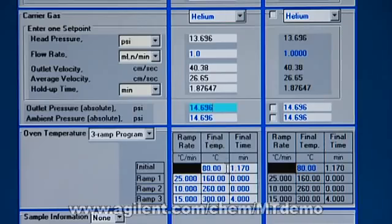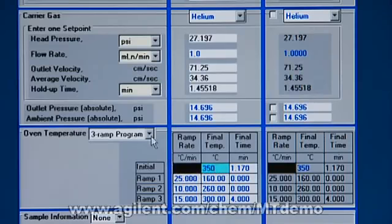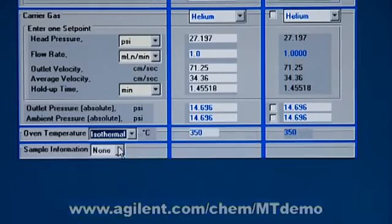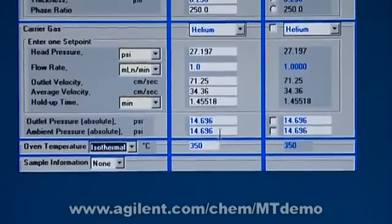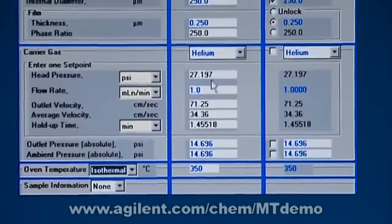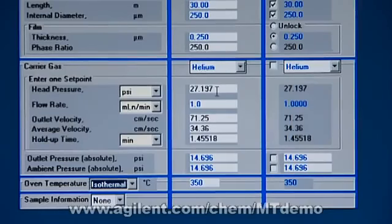I'm about as hot as you want to take a DB1. And I'm just going to click on isothermal here so we don't get confused on this stuff. So 350 degrees at 1 mil a minute costs 27 psi to drive that flow.